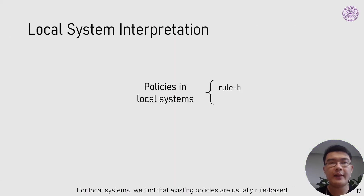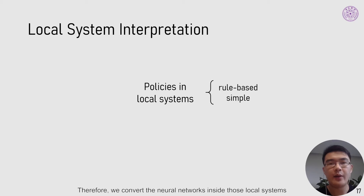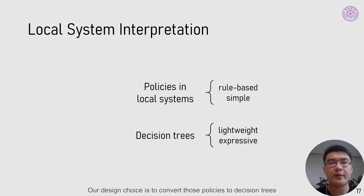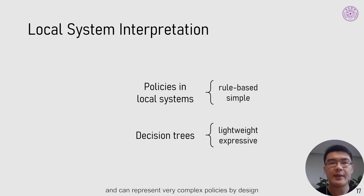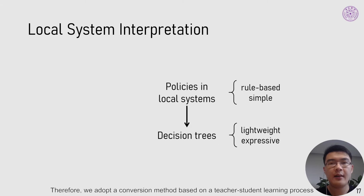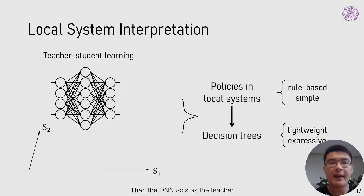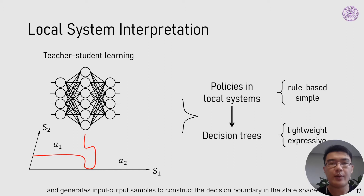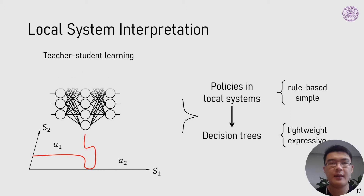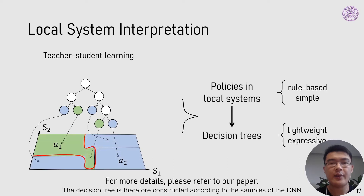For local systems, we find that existing policies are usually rule-based with simple decision logic. Therefore, we convert the neural networks inside those local systems into simpler, self-interpretable models. Our design choice is to convert those policies into decision trees, which are lightweight enough for network systems and can represent very complex policies. We adopt a conversion method based on a teacher-student learning process. Operators train the DNN first, then the DNN acts as the teacher and generates input-output samples to construct the decision boundary. The decision tree is then constructed according to those samples.